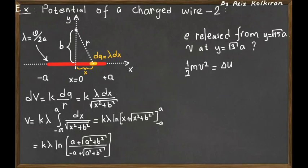The change in potential energy of the electron will equal the kinetic energy gained by the electron because it is released from rest. The final speed may be expressed in terms of the potential energy, and the potential energy is just the charge q times the potential difference, and we have already obtained the potential of any point on the y-axis.